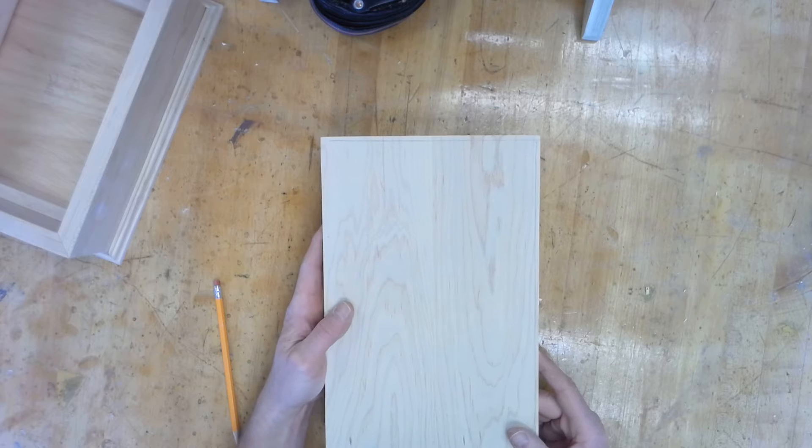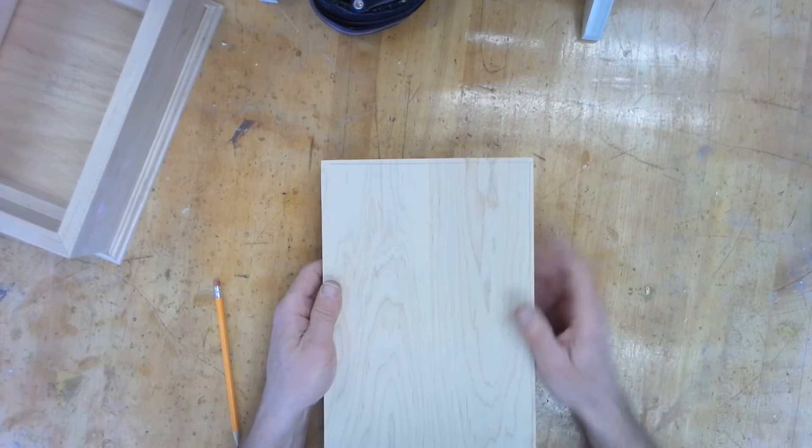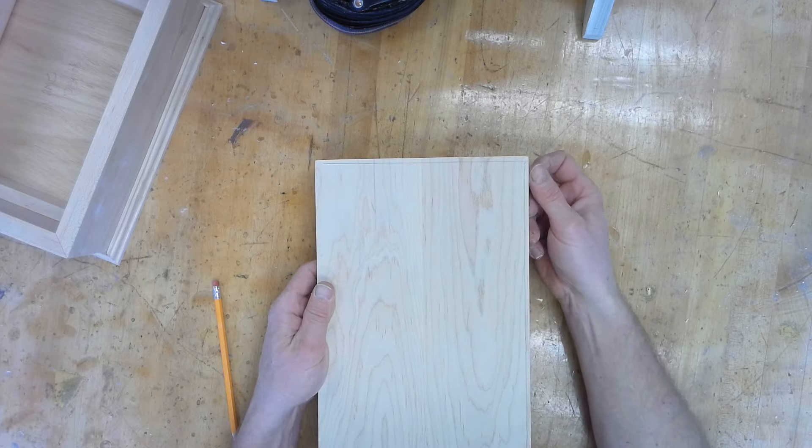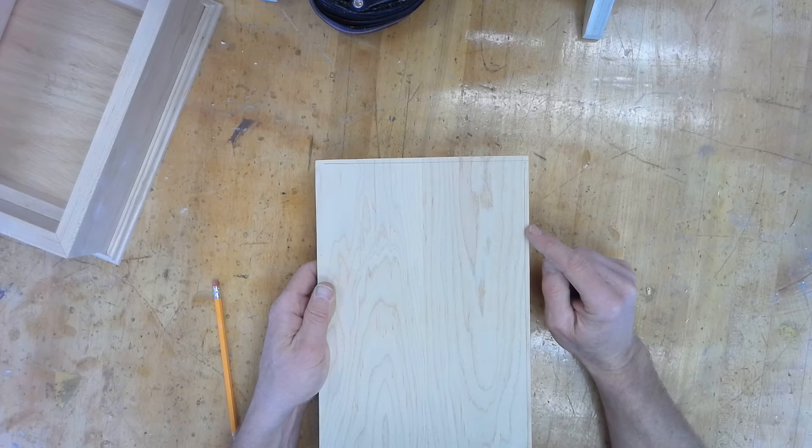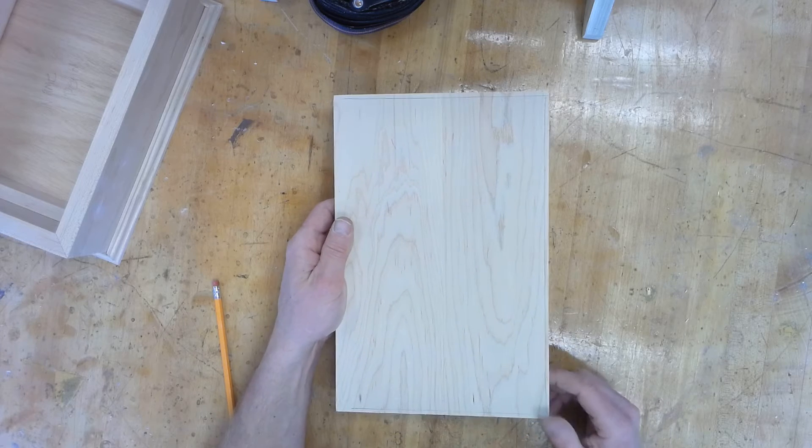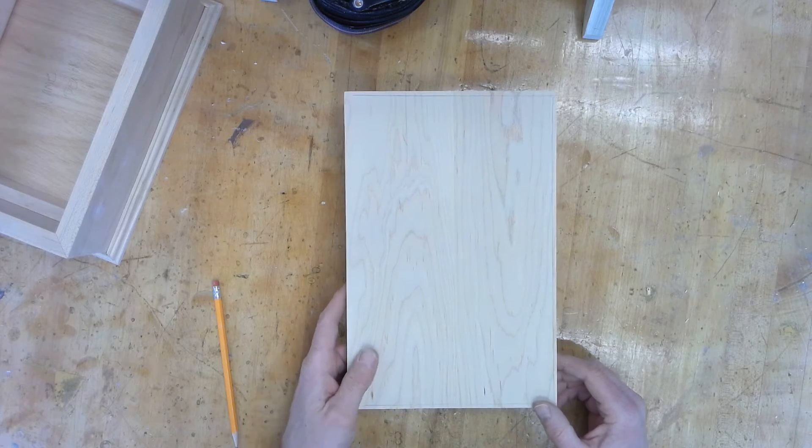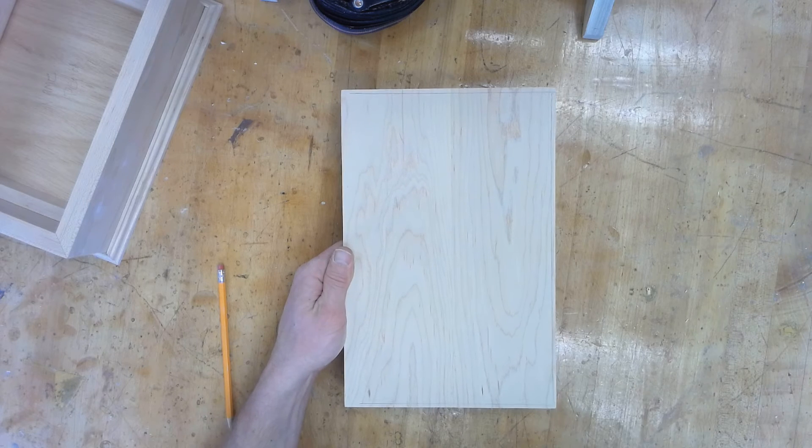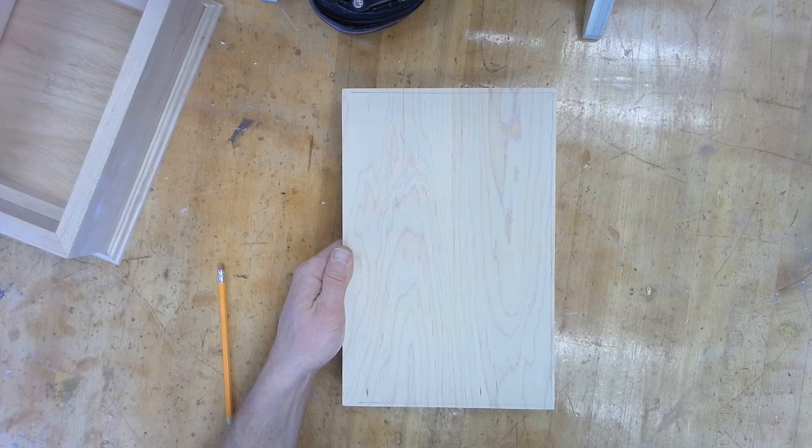Why do I always say do the end grain first? If we come across here and we do have a little tear out here, hopefully when we're going to do the front edge, that tear out is going to get routered away. So that's why we router our end grain first. Let's go over to the router table and router up our edges.